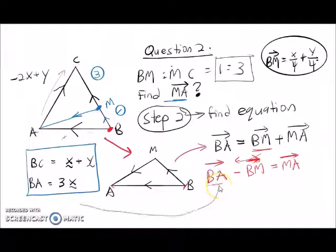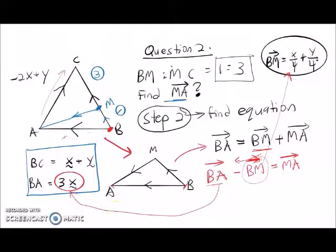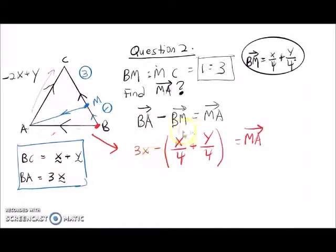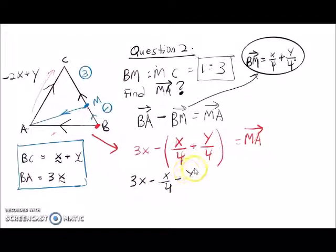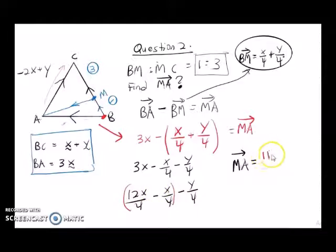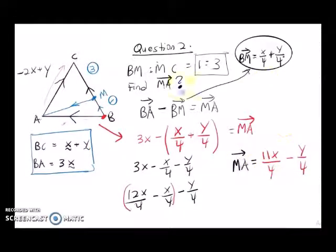Looking at the values: BA we obtain as 3x, and BM we obtained from the previous calculation as x over 4 plus y over 4. Substituting: MA equals 3x minus (x over 4 plus y over 4). Opening the bracket: we solve the x terms and get 11x over 4 minus y over 4. With this knowledge you can start to practice your IGCSE questions on the vector chapter. All the best — subscribe and comment below, thank you!